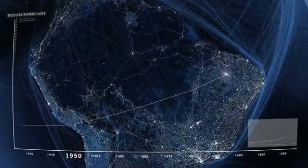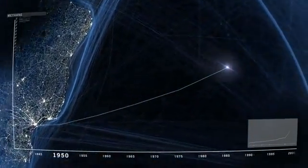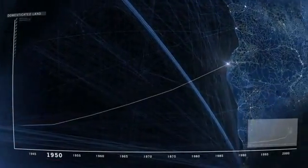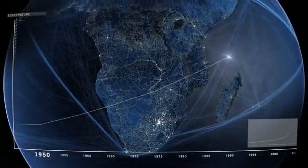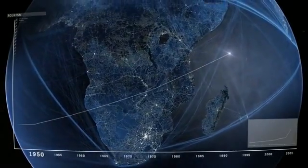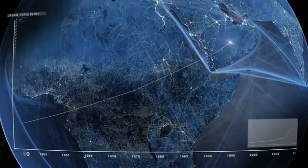We move more sediment and rock annually than all natural processes, such as erosion and rivers. We manage three-quarters of all land outside the ice sheets. Greenhouse gas levels this high have not been seen for over one million years. The temperatures are increasing.